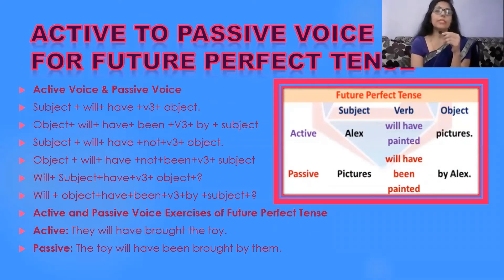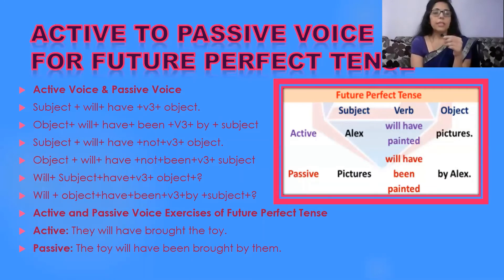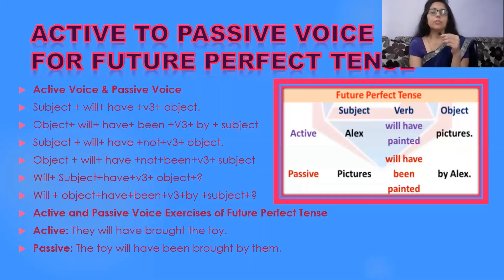In future perfect tense, you identify the structure as: subject + will have + third form of verb + object. To change to passive: object + will have been + third form of verb + by + subject. For example, 'They will have brought the toy' — here 'they' is subject, 'will have brought' is the verb phrase, and 'the toy' is the object — becomes 'The toy will have been brought by them.'